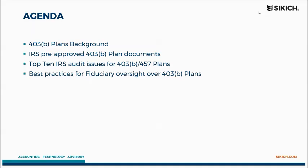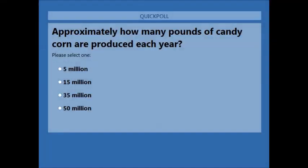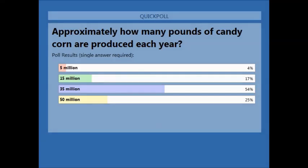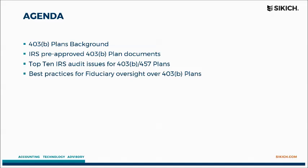Good morning everybody. We're going to start off with a quick polling question to make sure we fit in CPE for those who need it. Just to keep things lighter, we're going with a holiday theme. Approximately how many pounds of candy corn are produced each year? The options are 5 million, 15 million, 35 million, or 50 million. It looks like most folks got the right answer — 35 million — so hopefully you didn't all personally engage in that much candy corn consumption just past the Halloween holiday.